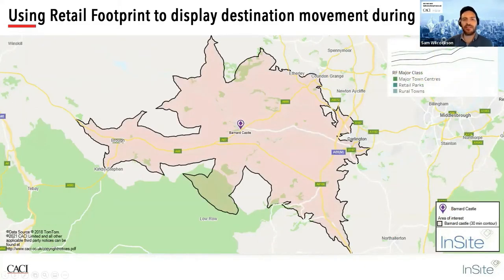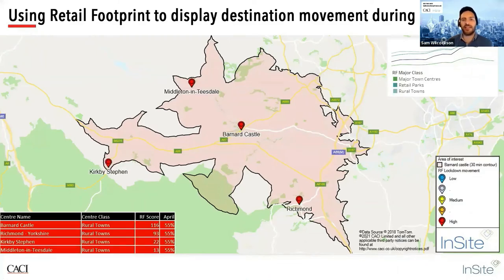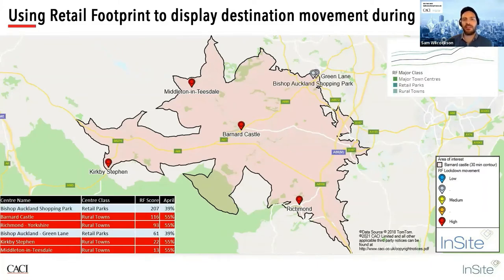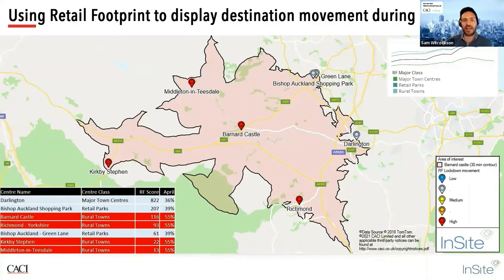Now looking at a catchment showing a 30-minute drive time around Barnard Castle. The locations in red are rural towns showing the highest levels of movement, but still down to 55% of pre-COVID levels. The retail parks of Bishop Auckland were down to 39% of pre-COVID movement. And Darlington, which belongs to the major town centre class, had movements down to an average of just 36% of pre-COVID levels. The rural towns actually maintained their interactions with consumers much better compared with other classes — people wanted to support their independence in the local community.